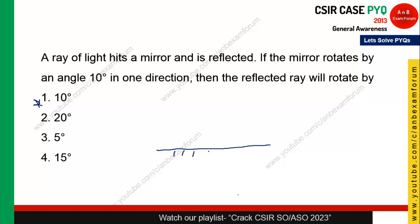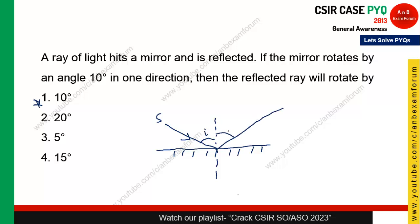So this is the mirror. This is the normal line in the first case. This is the source of light. This is the angle of the incident ray — this is the angle of incidence. And this is the angle of reflection, which will be the same angle I.